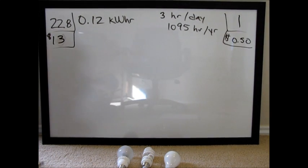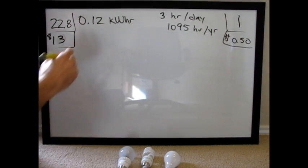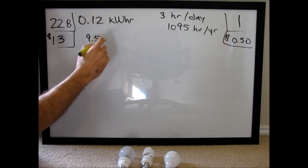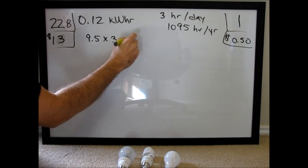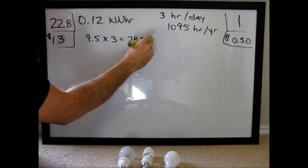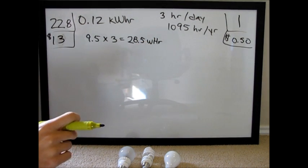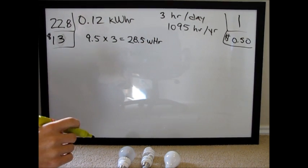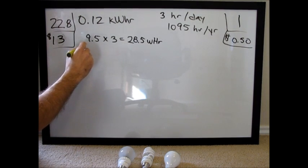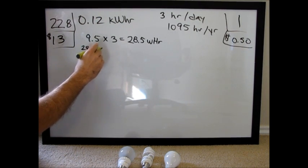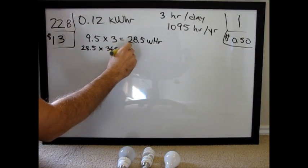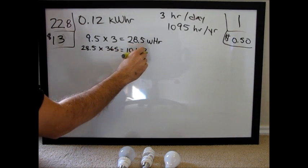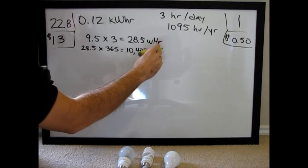Now, let's do the math. So, if this, which is rated at 9.5 watts times three hours per day equals 28.5 watt hours. And so, over the course of a year, let's multiply that by a year, 28.5 times 365 equals 10,402.5 watt hours.